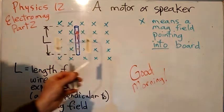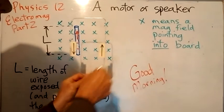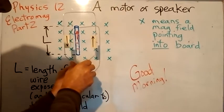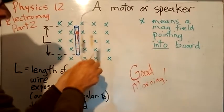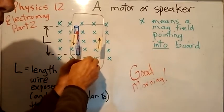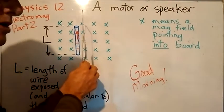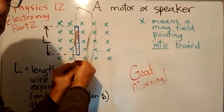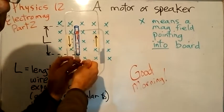One thing scientists noticed a long time ago was that if you didn't have electrons flowing in a wire, but you just had a wire and you moved it in a magnetic field - if you turn that wire in a magnetic field - you create electron flow, you create current in the wire. So all you have to do is push a wire in a magnetic field and it'll cause electricity to be produced. That's called induction, and it's what happens in a generator.